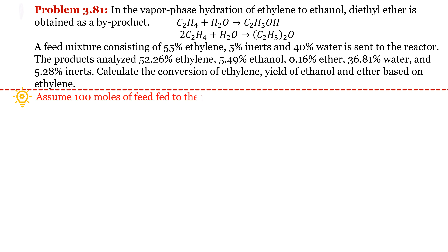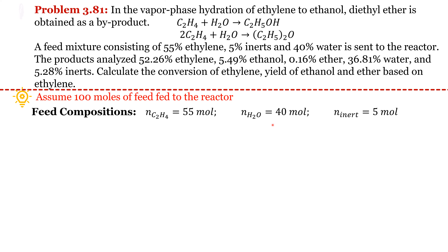We assume total moles of feed to the reactor is 100 moles. This contains 55% ethylene, 5% inerts, and 40% water. So moles of ethylene = 55, moles of H2O = 40, and moles of inert = 5. Inerts is the tie component because moles of inerts will not change during the operation. Since total moles of product are not known, we assume total moles of product equal to P.